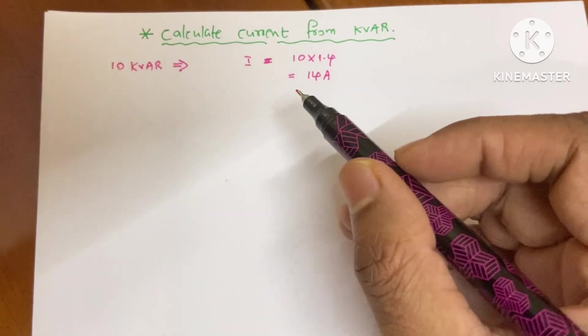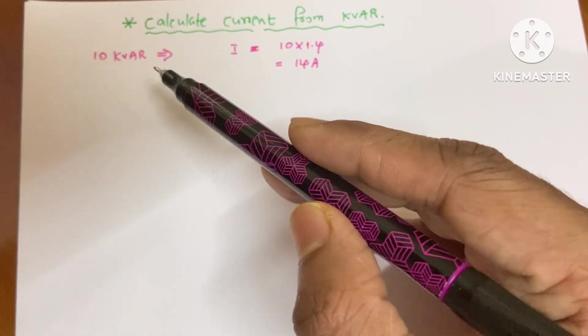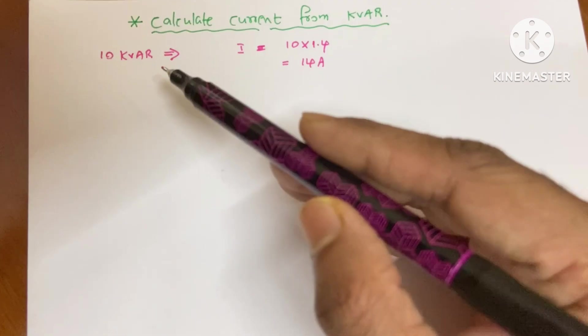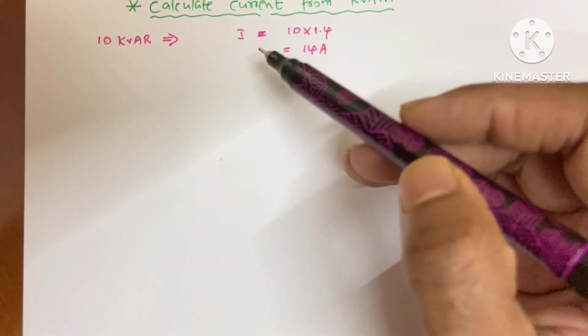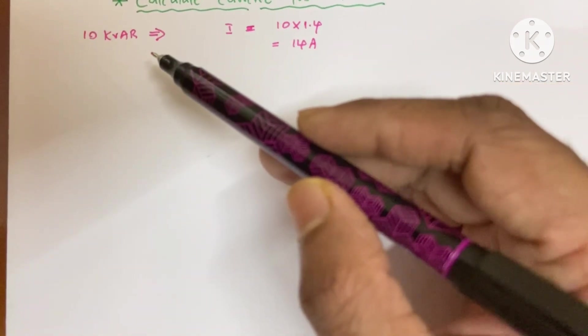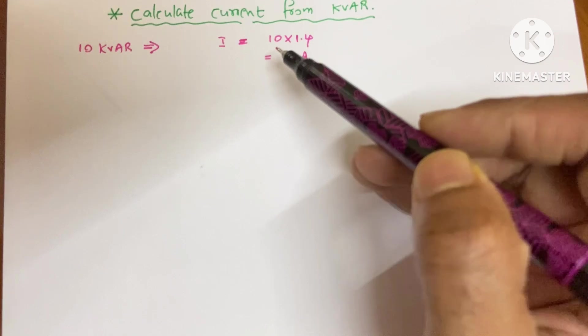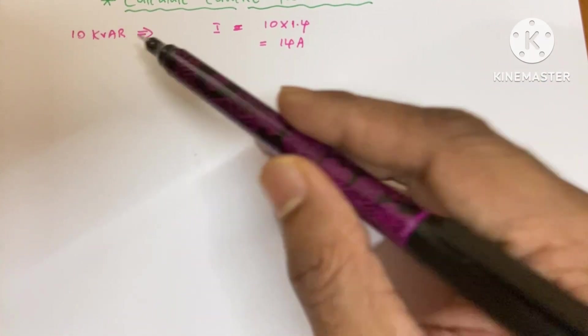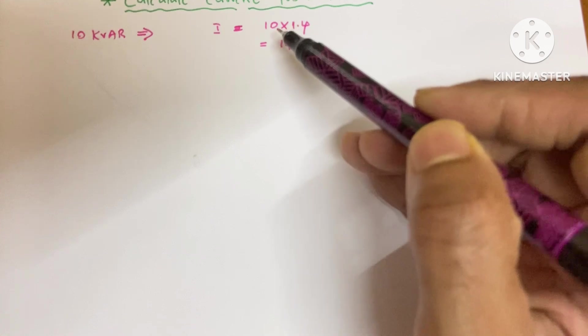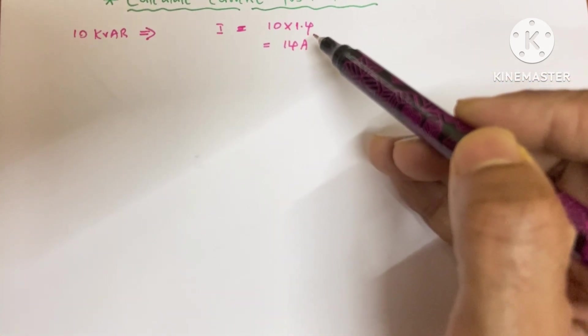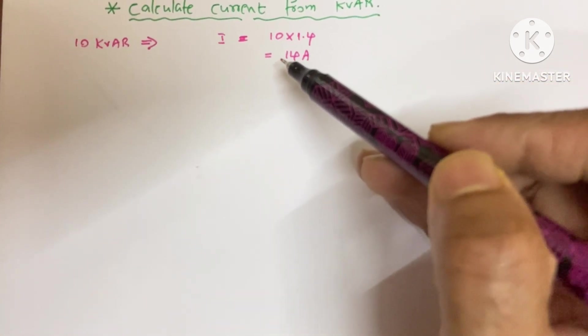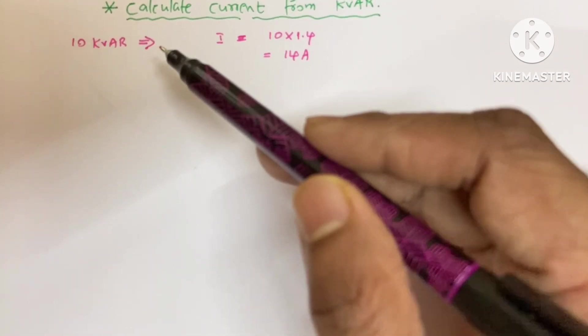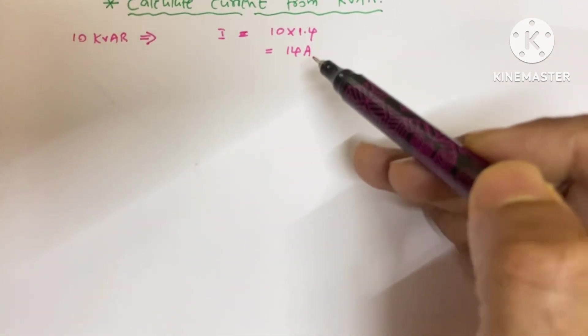Suppose you have a capacitor bank rating of 10 KVAR. If you need to find the current of this 10 KVAR, you just need to take this 10 and multiply it by 1.4. That means your current rating for this specific capacitor bank is 14 amperes.